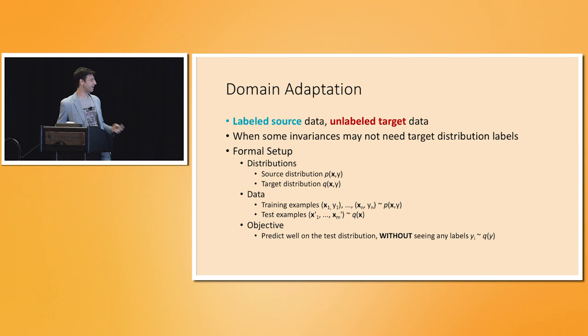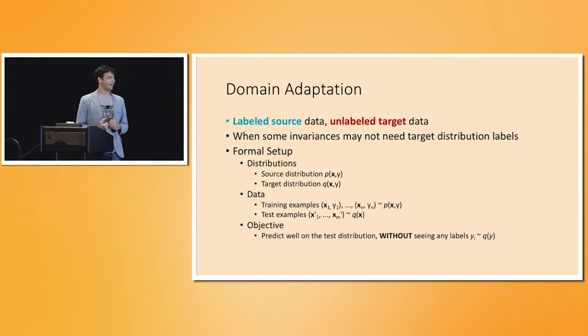Transfer learning tends to work really, really well. A special case of transfer learning is the domain adaptation problem. In the context of deep learning, domain adaptation is often approached in a very heuristic way right now.